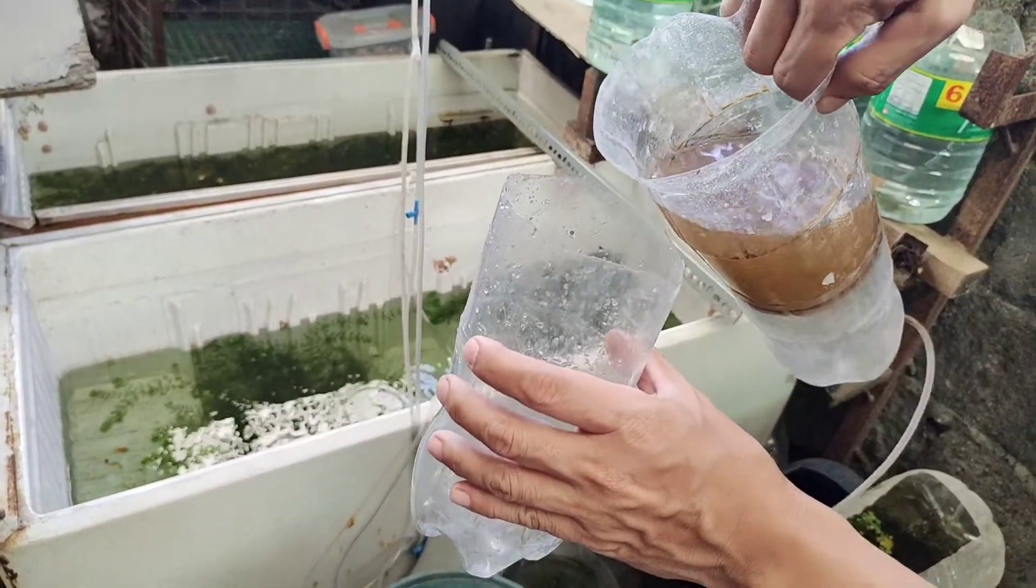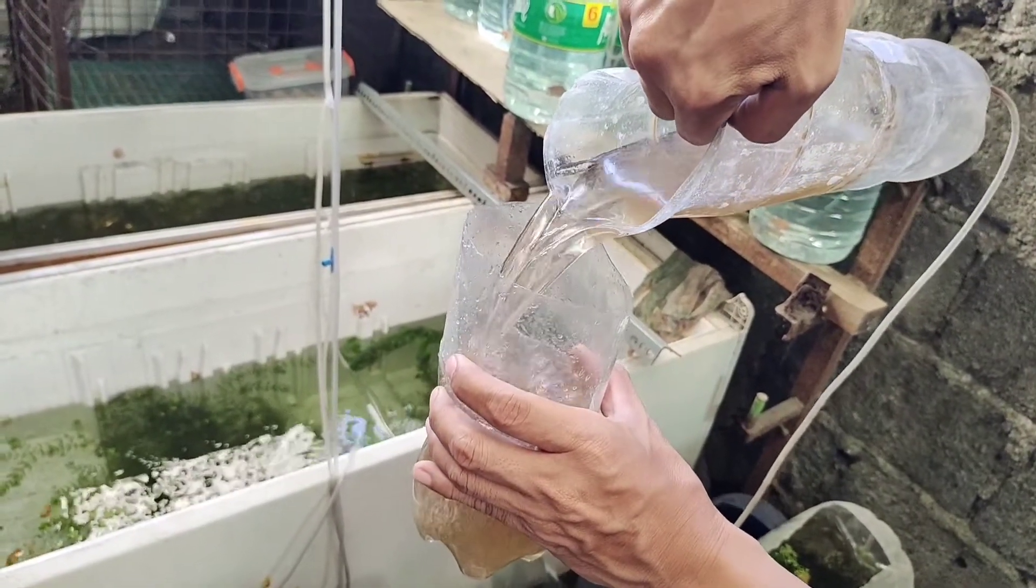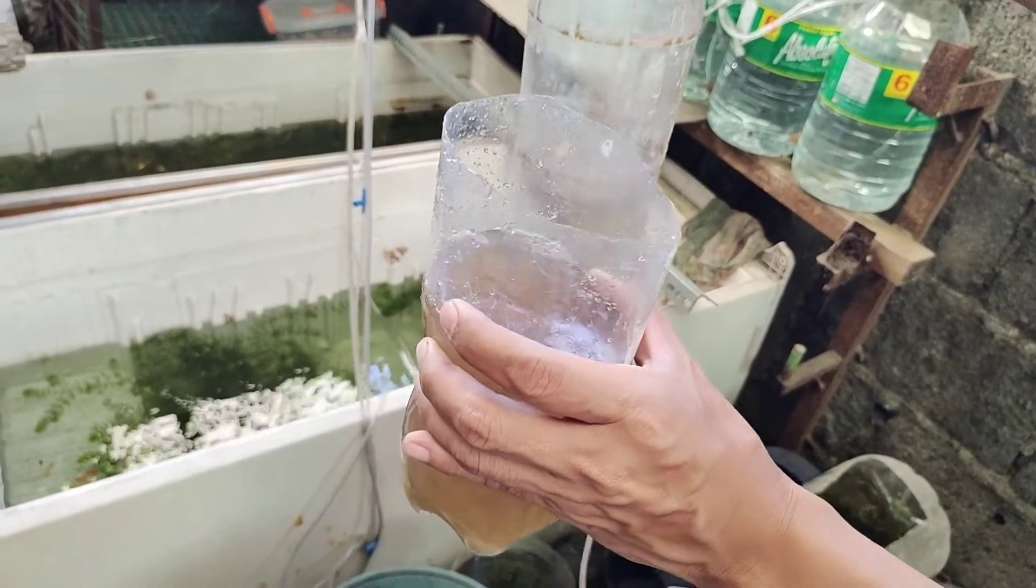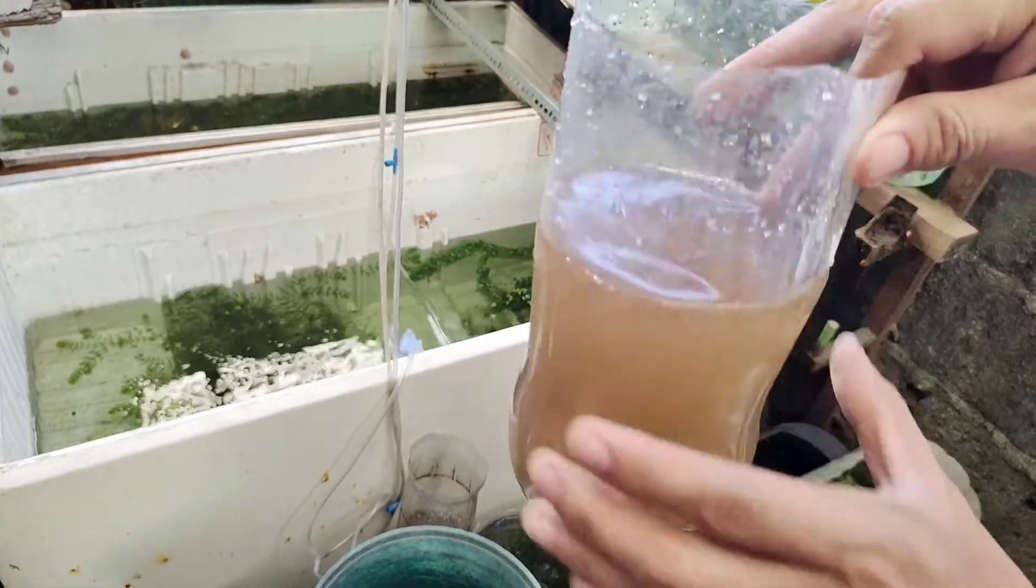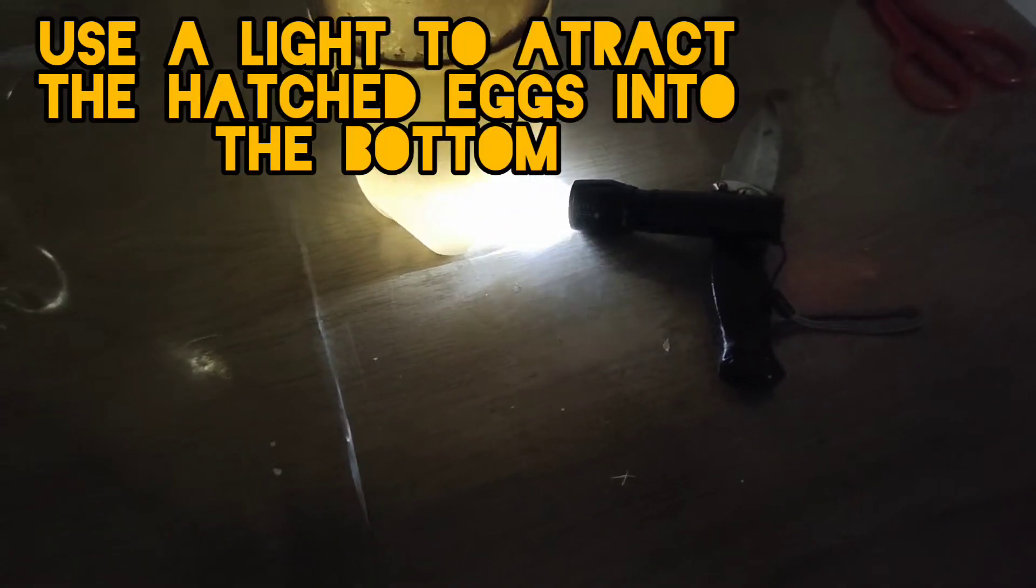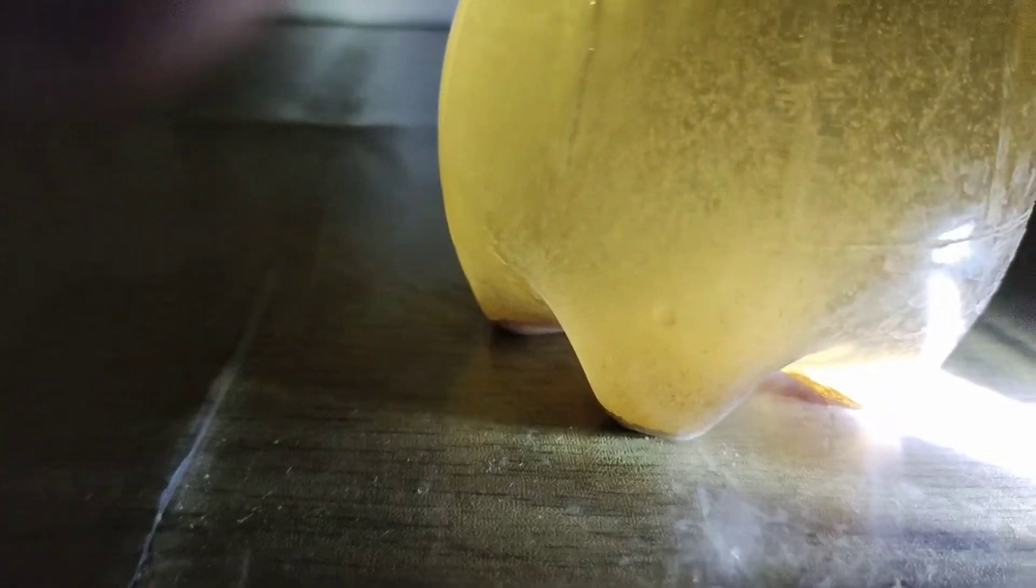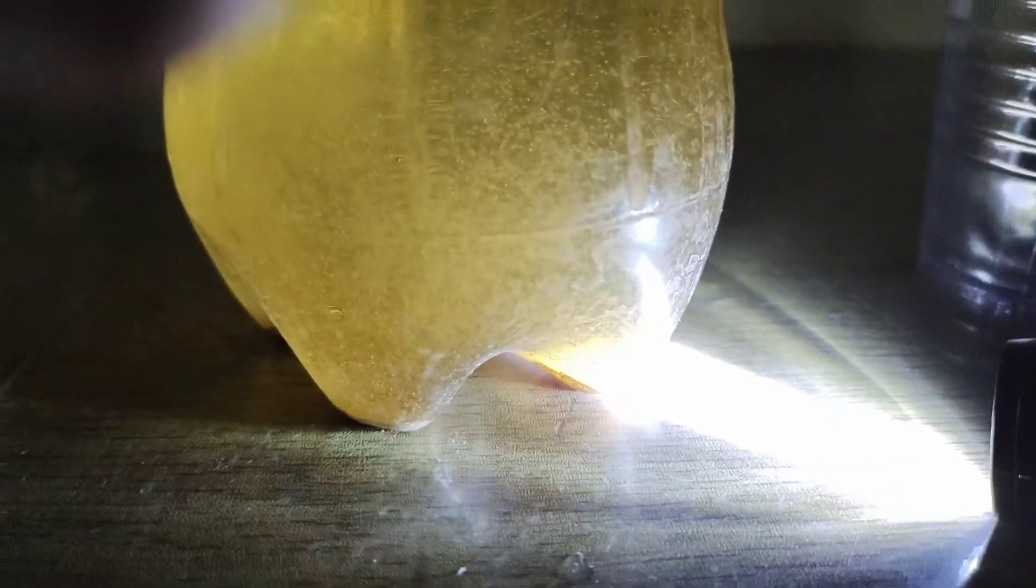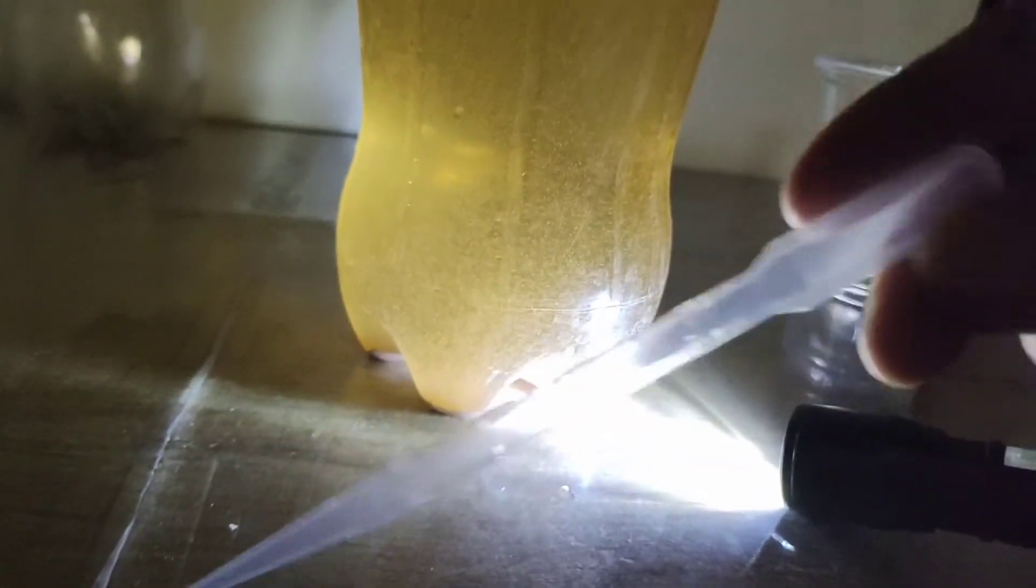The color now has turned orange - this is the color of the brine shrimp. I already turned off the light so I can use my flashlight to light the bottom part of the container. The hatched shrimp will naturally sink at the bottom because they are attracted to the light. I will use this tiny turkey baster and this cup to harvest the brine shrimp.